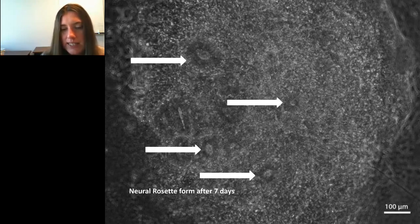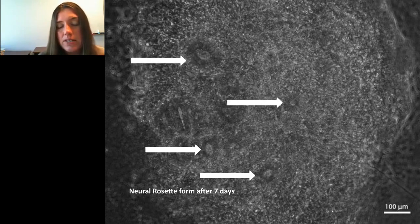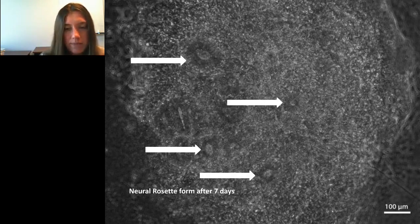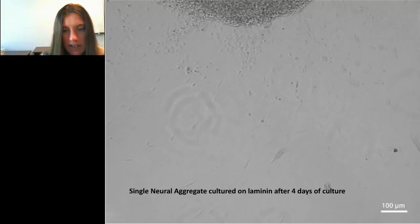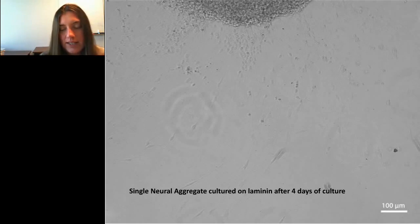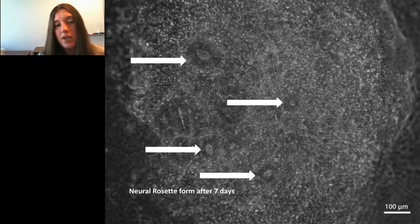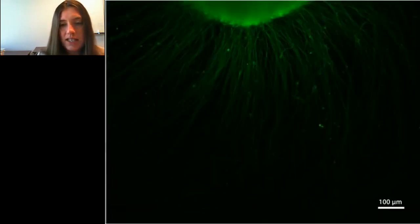If you culture these neural aggregates in a six-well plate together, they begin forming rosettes at seven days — five days of aggregate formation plus seven days post-induction — creating these neural rosettes which are essentially mini spinal cords. You can actually select out for these to get a pure population of neural progenitors associated with the central nervous system.